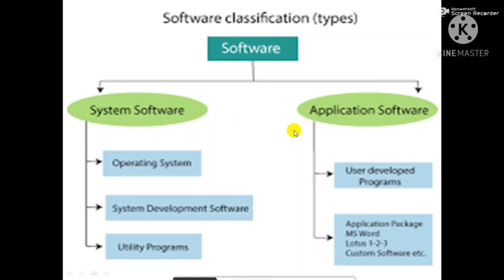Now let's see about application software. Application software is the name given to programs and files that are used for a specific purpose. For example, in your smartphone, if you want to download any app, you go to Google Play and download it for a specific purpose — that is called application software. Thank you, hope you have understood this chapter.